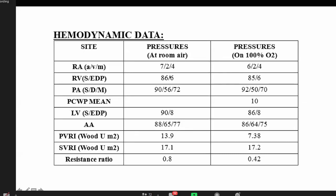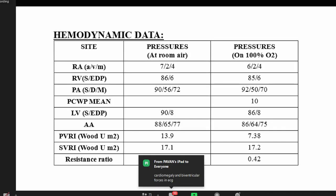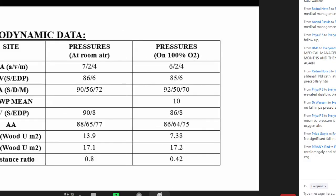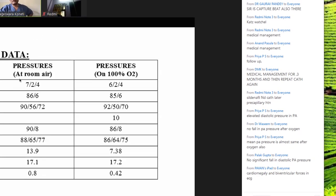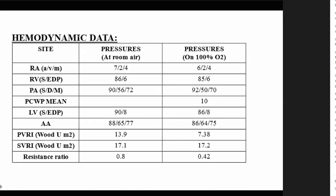The pulmonary diastolic pressure fall criterion with oxygen applies to both PDA and VSD (post-tricuspid patients) as well as AP window. Pulmonary vasodilator therapy with sildenafil and bosentan is indicated for symptomatic patients. Giving vasodilators, recatheterizing, and proceeding to surgery with fenestration if PVR improves is theoretically discussed but not yet validated in practice at this institute. At this point, the recommendation is medical follow-up — pulmonary vasodilator therapy only when symptomatic.